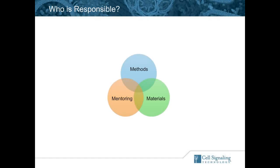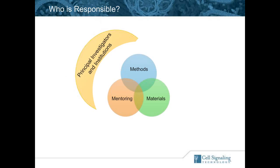Who's responsible for each of these areas? Principal investigators and their institutions should be responsible for the mentoring and methods component of the three M's. That means principal investigators and institutions should be training their students in statistical analysis, in how to set up experiments, and in the proper use of reagents and protocols. They need to teach basic good laboratory practices, keeping notebooks, and things like that. We realize this is difficult for a lot of investigators who are busy writing grants, but we feel this is an important initiative, and coming into the future there will be more effort by institutions to train especially younger scientists.